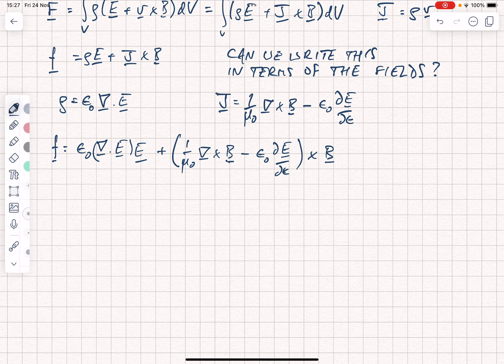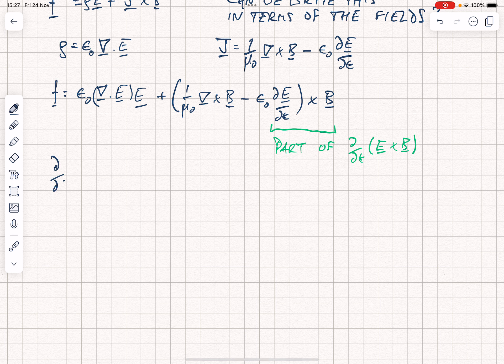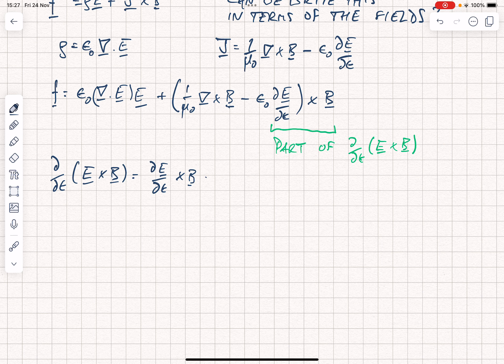Now, just on the right here, this dE by dt crossed with B looks like part of d by dt of E cross B, which is closely related to the pointing vector. So let's develop that a little bit further. So we're going to say that d by dt of E cross B is going to be dE by dt crossed with B, which is what we had already, plus E crossed with dB by dt.